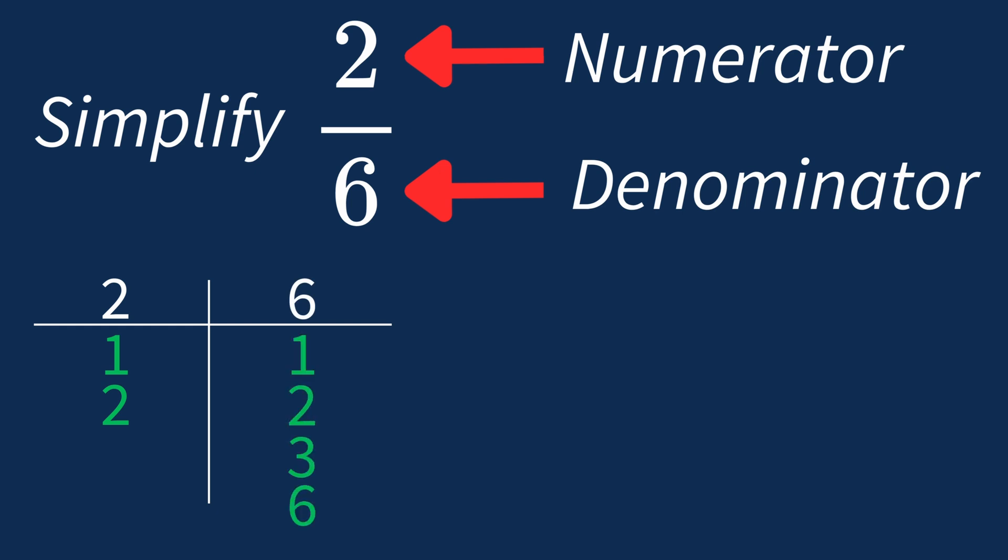Now when we compare these lists, we can see that the largest common factor between 2 and 6 is 2. This means we can divide both the numerator and denominator by this common factor to simplify the fraction.